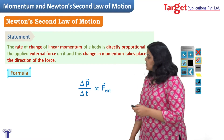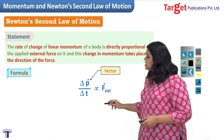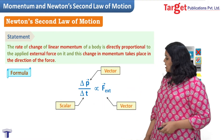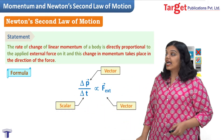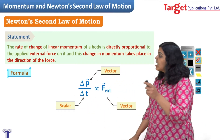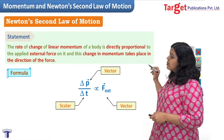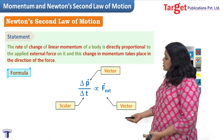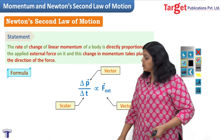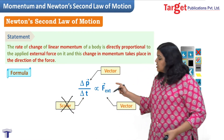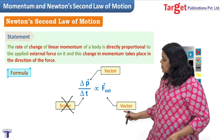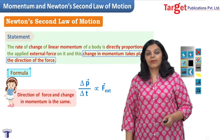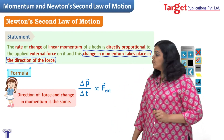In this expression, p is a vector, t is a scalar, and F is a vector. This helps us understand the second part of the statement: change in momentum takes place in the direction of force. Since t is a scalar and does not contribute to direction, the direction of the external force depends only on the direction of momentum. Therefore, the direction of change in momentum is the same as the direction in which the force acts.